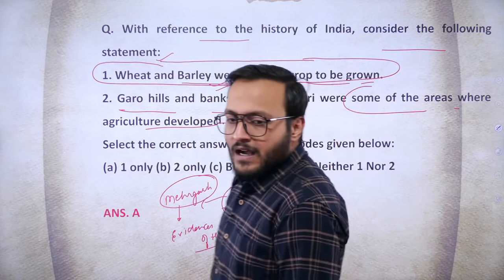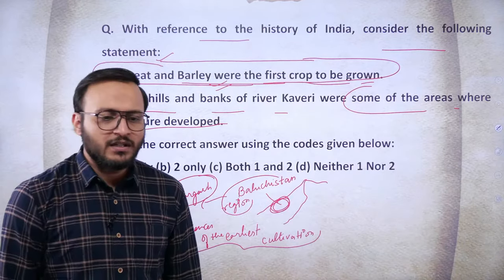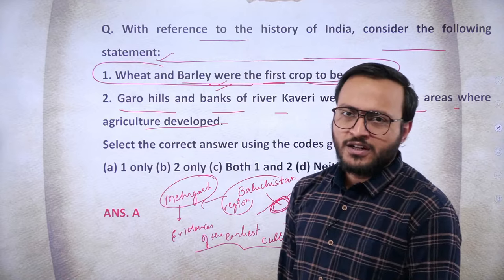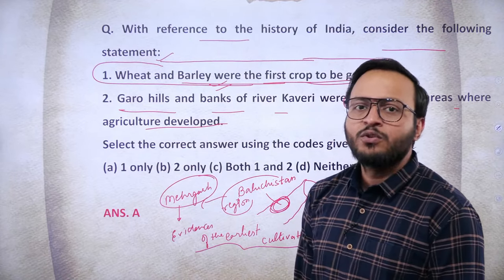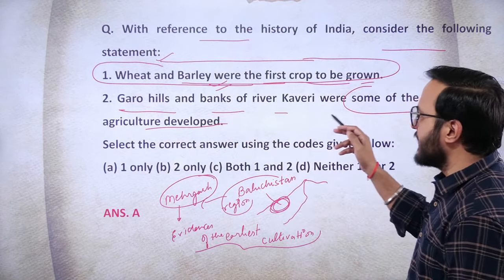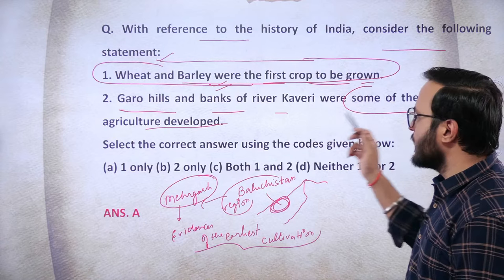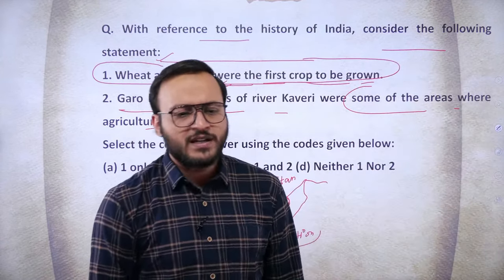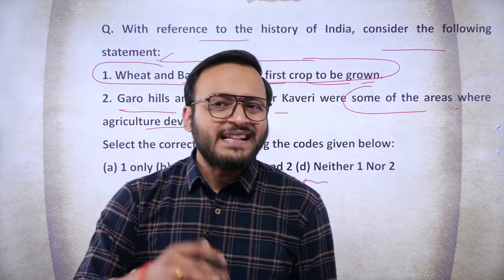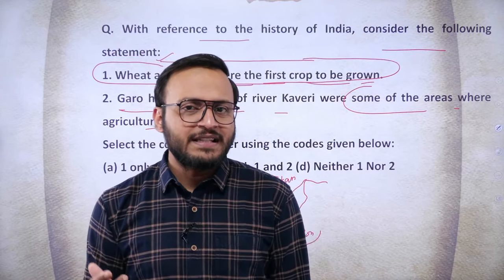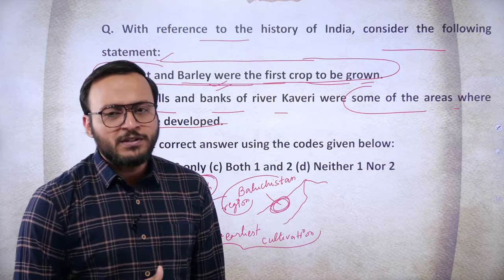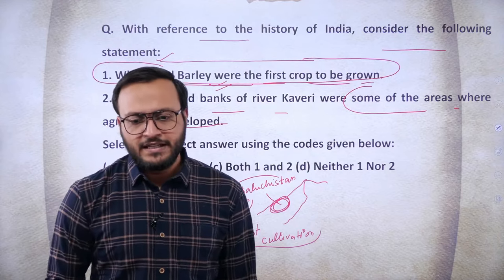As per the book, the right answer is option A, because R.S. Sharma suggests wheat and barley were the first crops to be grown, particularly in the northwestern region — specifically Balochistan — at a place called Mehergarh. The second statement is incorrect because Garo Hills and banks of river Cauvery were comparatively less populated, lesser developed, and more densely vegetated areas, making agricultural development there unlikely.